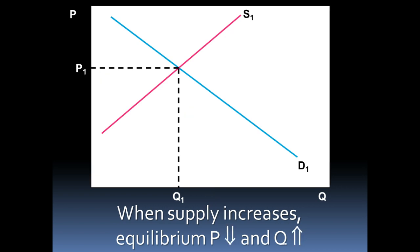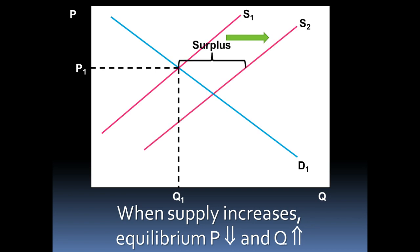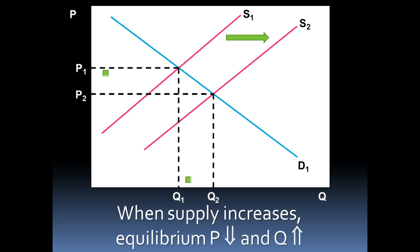If we do the opposite and increase supply, then at the original price level P1 there's now a surplus of jeans — more jeans supplied than are demanded. Price begins to come down as suppliers lower prices to clear inventory. As a result, price decreases while quantity increases.